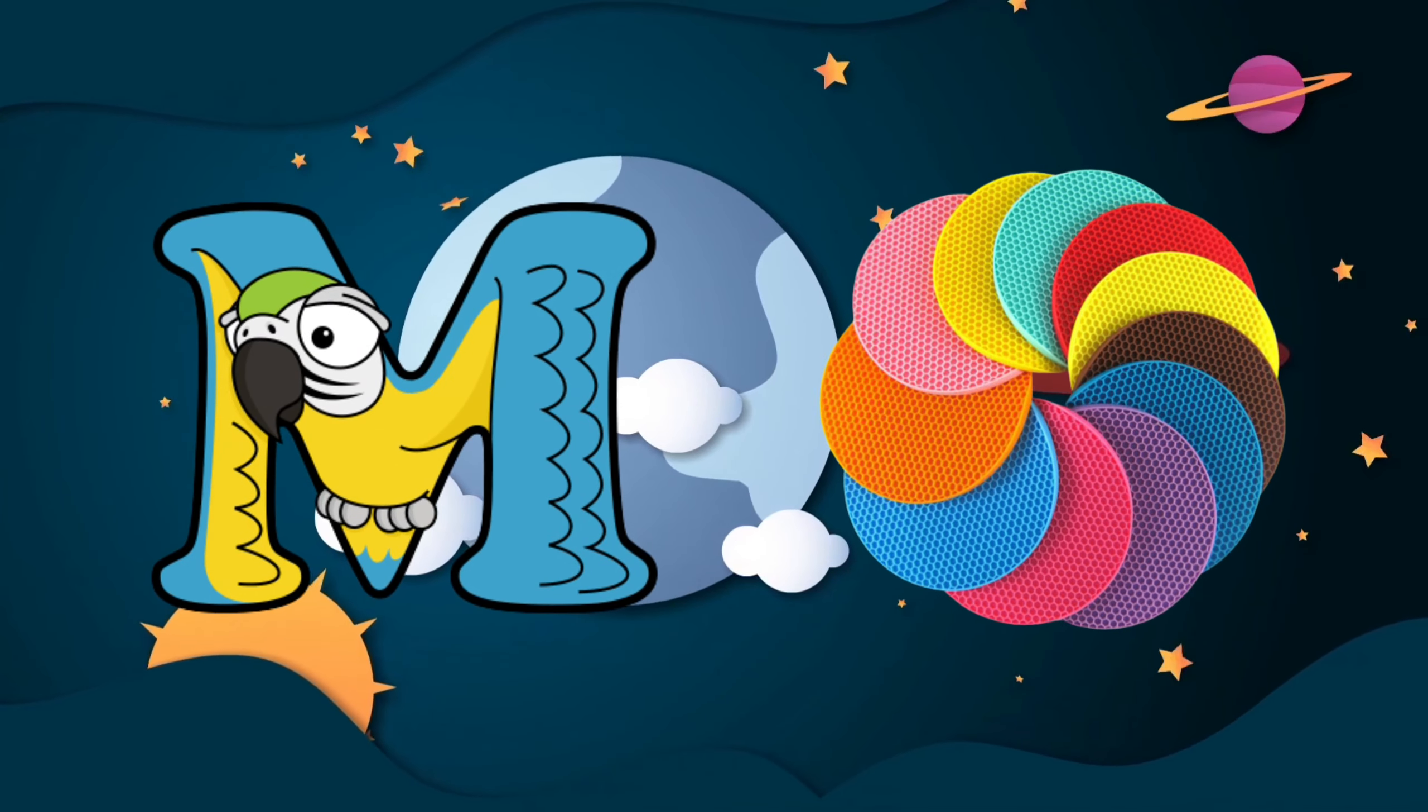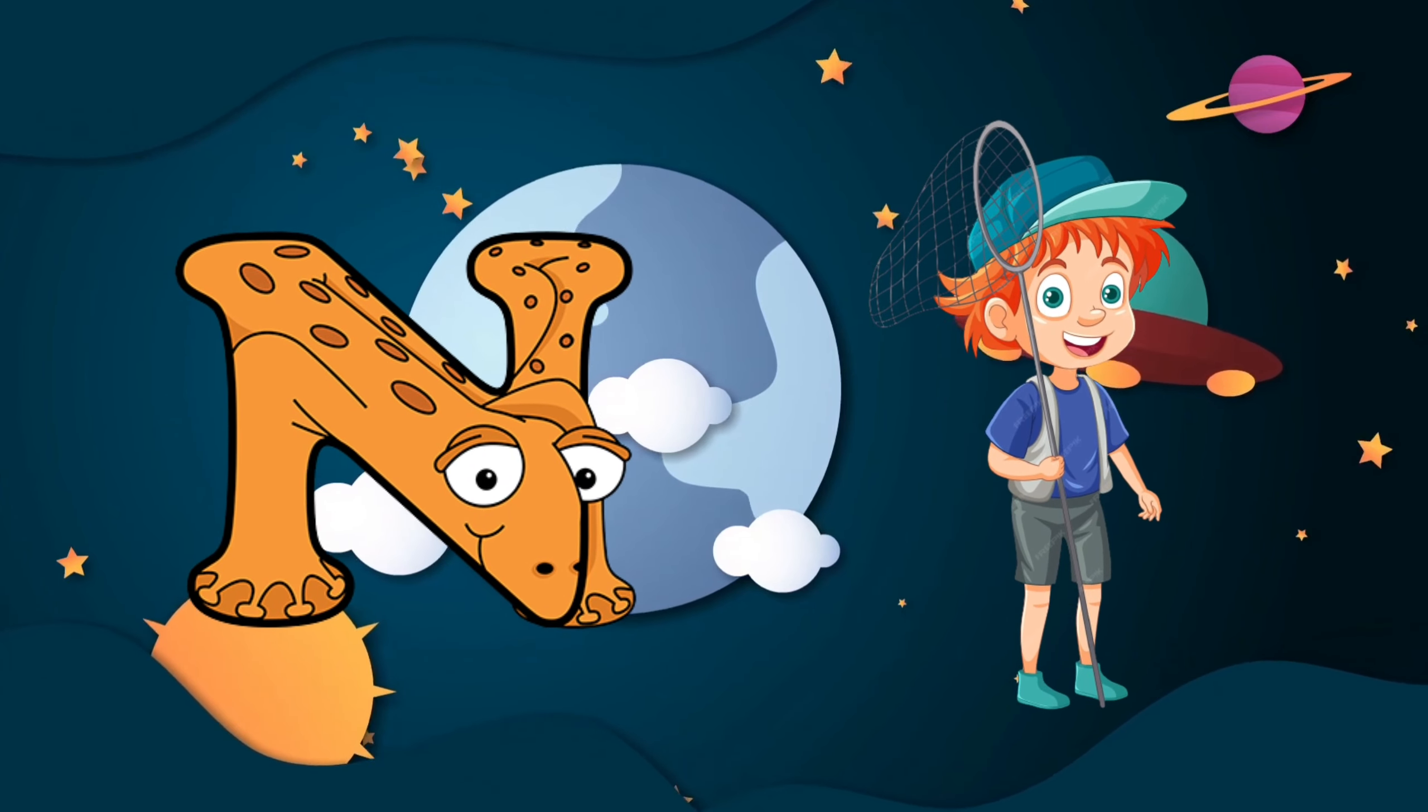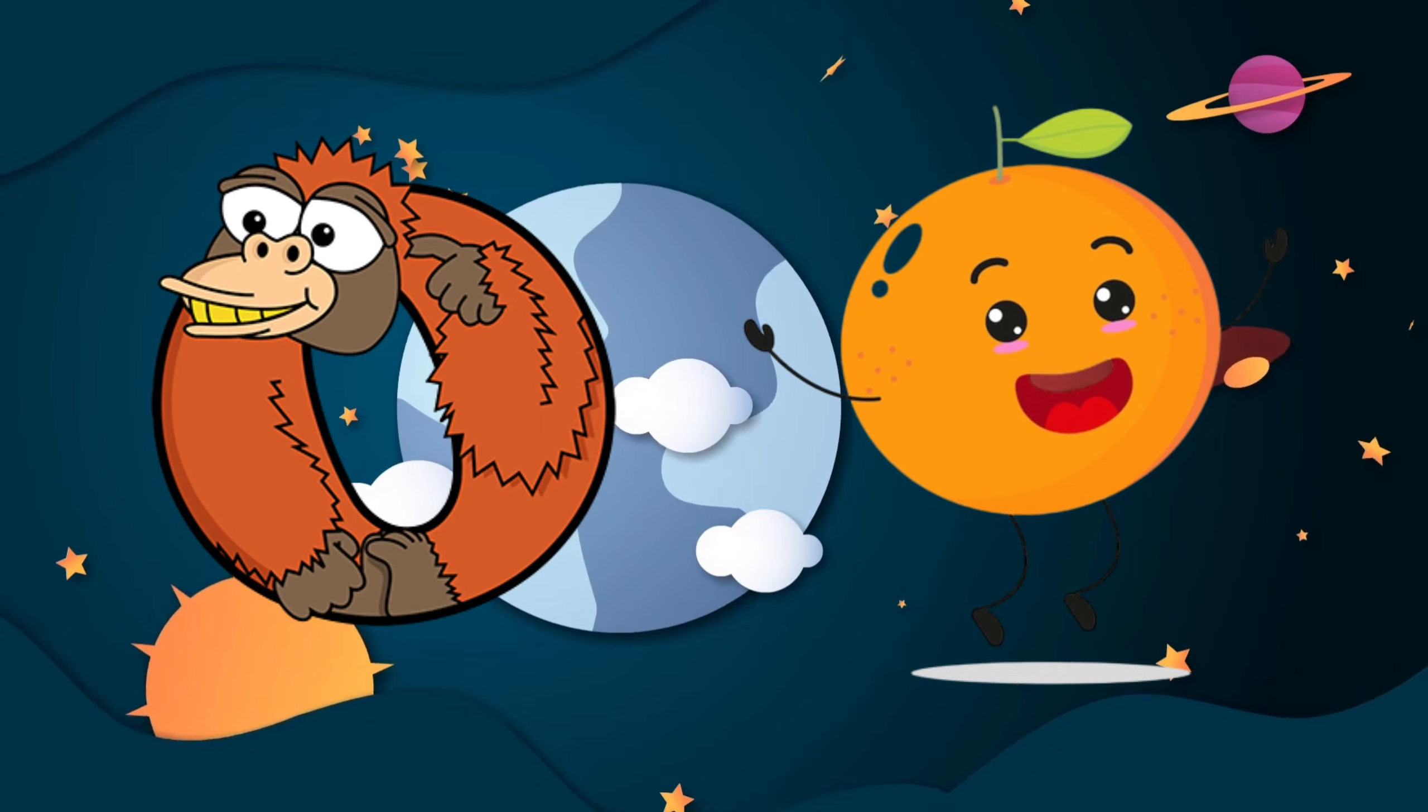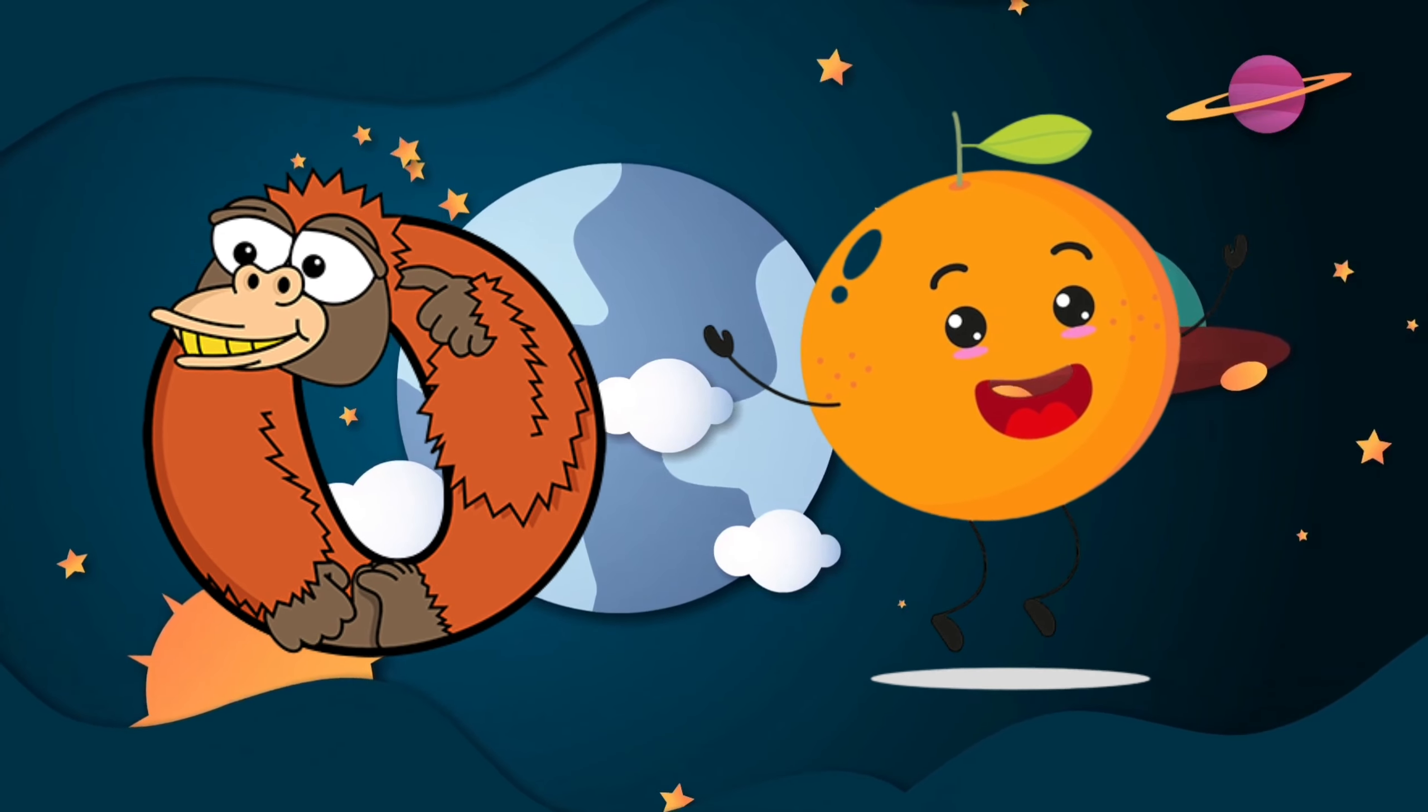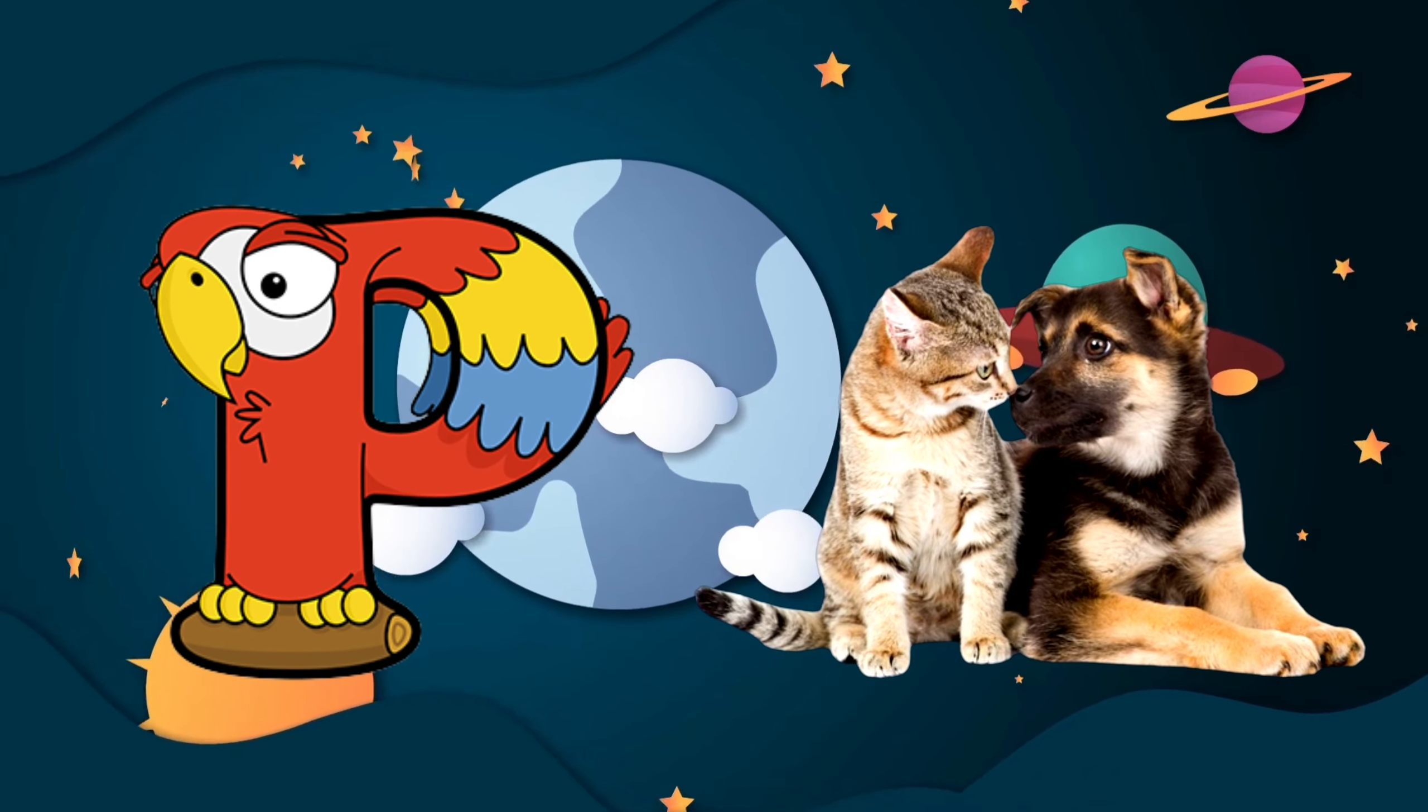M is for mat, m-m-mat. N is for net, n-n-net. O is for orange, o-o-orange. P is for pet, p-p-pet.